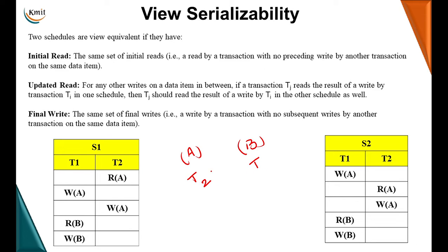Though the order has changed, we get the same action: the initial read of data object A in schedule S2 is also by T2. With respect to B, the initial read before any write of B is by T1 in S1. In S2, there is no write of B before the read, so the initial read of B is also by T1.